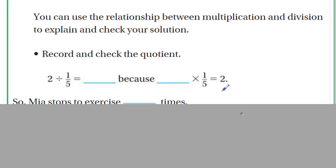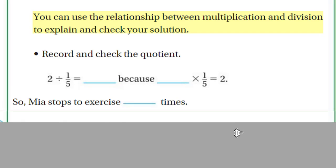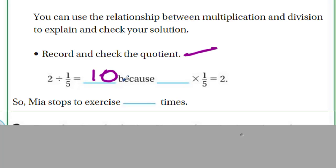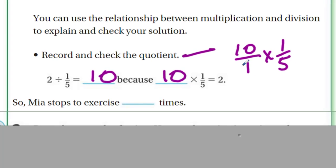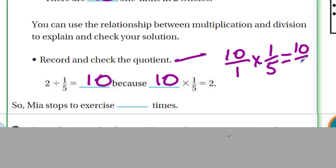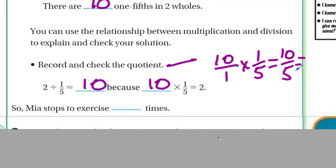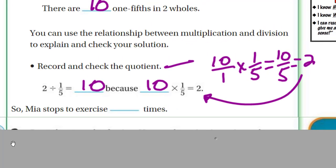Now it says you can use this relationship between multiplication and division to explain and check your solution. So let's record and check the quotient. Again, reminder, quotient is that answer within a division problem. So if we have 2 divided by 1-fifth equals 10, and that's because, if you look here, that's because 10 times 1-fifth equals 2. Now this we've already done. 10 over 1 times 1-fifth. Remember, this is just a whole number represented as a fraction, giving us 10 over 5. And then, of course, 10 divided by 5 equals 2. That is why this is true. So Mia stops to exercise 10 times.